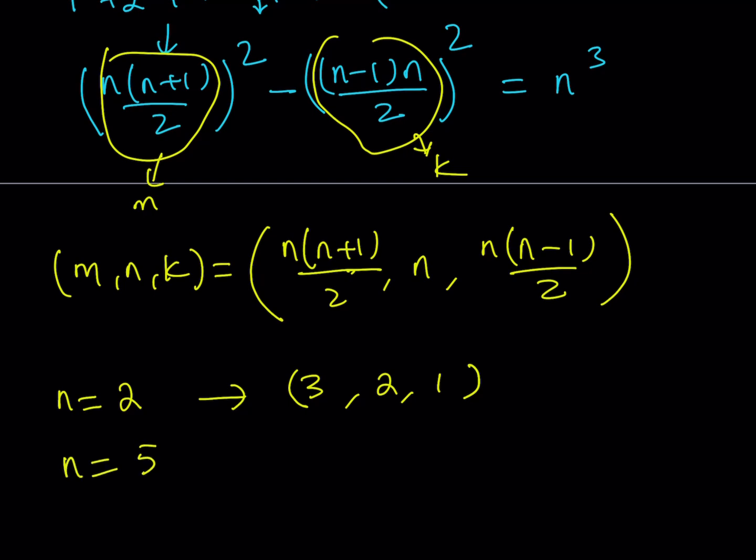Let's go ahead and replace n with 2. That's going to give me 2 times 3 divided by 2, which is 3. And then n is going to be 2. And k is going to be 2 times 1 divided by 2, which is 1. So 3, 2, 1 is going to satisfy this equation. If n is something else, like let's say n is equal to 5, then we're going to get 5 times 6 divided by 2 is equal to 15. Then 15, 5, and 5 times 4 divided by 2 is equal to 10. So 15, 5, 10 is also going to be another solution. Obviously, there are infinitely many solutions. As long as n is a positive integer, we basically get all the solutions from here.